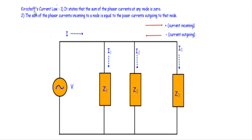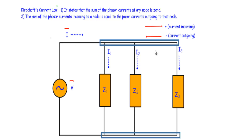Now let me talk about Kirchhoff's current law. KCL states that the sum of phasor currents at any node is zero. Here I have a parallel circuit where impedances Z1, Z2, and Z3 are connected in parallel — one end of each connected at one node, and the other ends connected at another node. In the circuit we are applying an alternating voltage V, with phasor value V-vector, resulting in source current I-vector. This circuit has two nodes total.